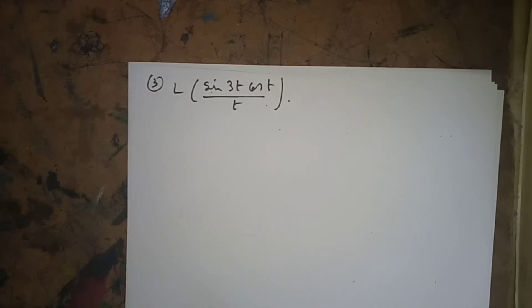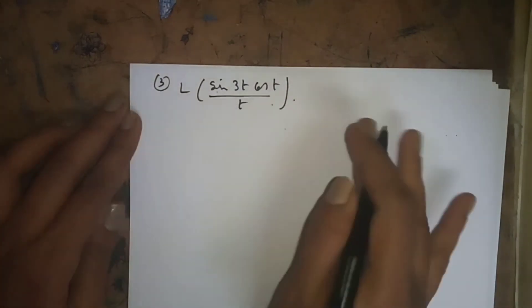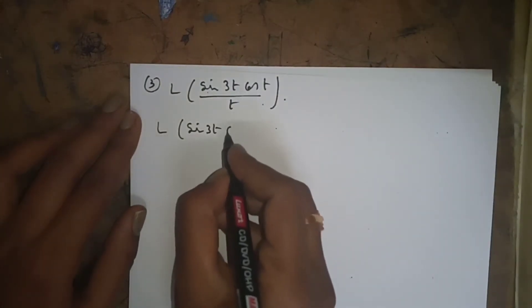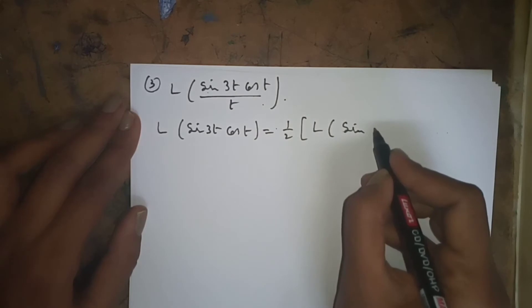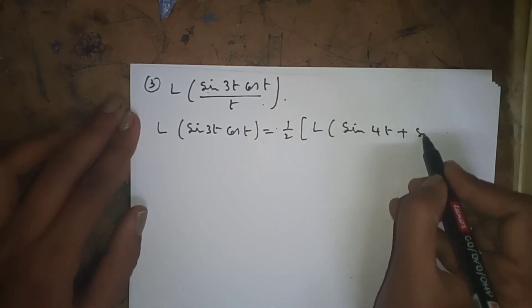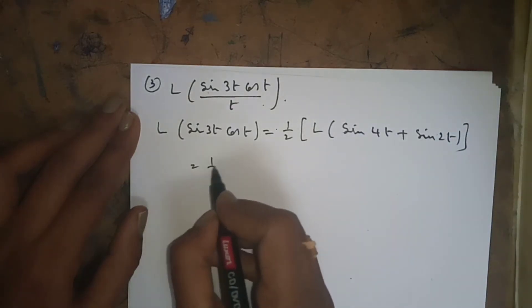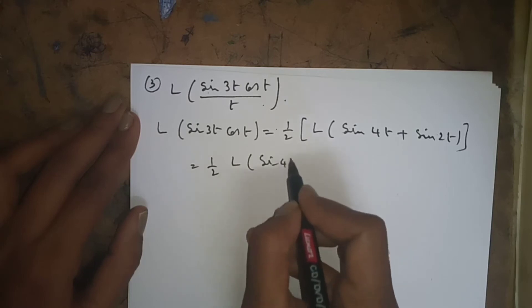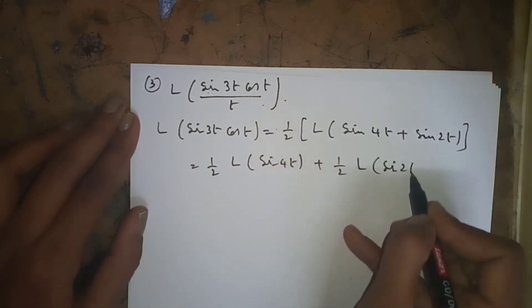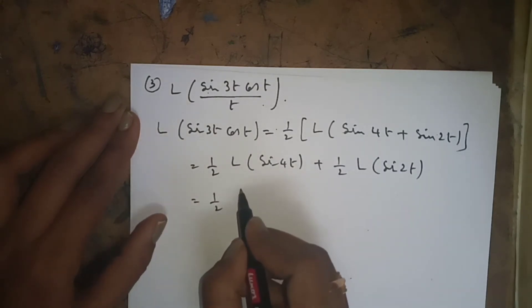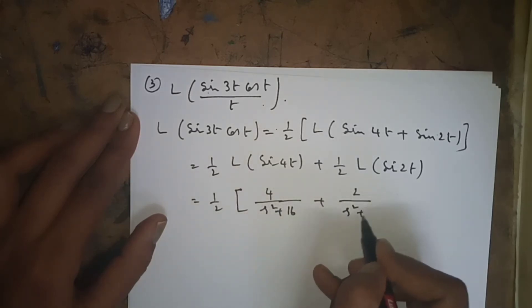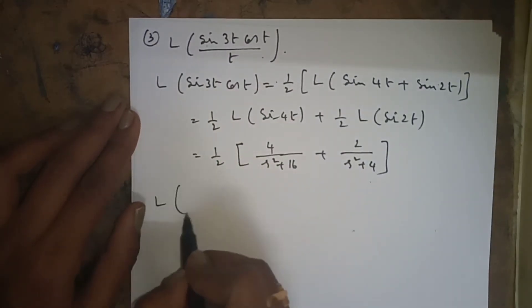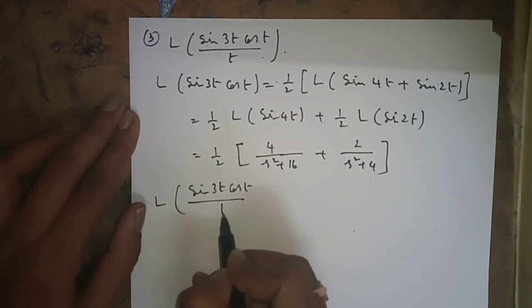The next problem is L{sin(3t)cos(t)/t}. First, L{sin(3t)cos(t)} = (1/2) · L{sin(4t) + sin(2t)} = (1/2)[4/(s²+16) + 2/(s²+4)] using the product-to-sum formula.